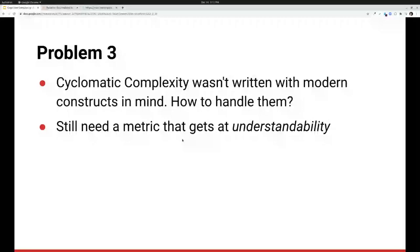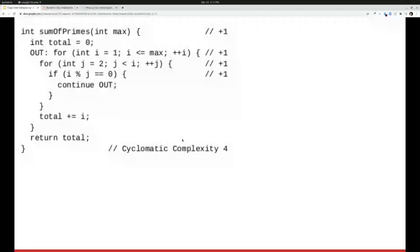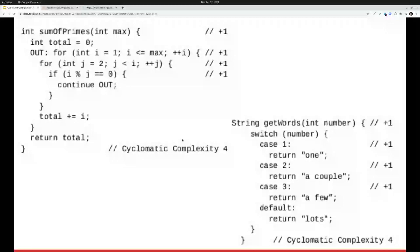As an illustration of that, I've got a couple of methods that I've lifted straight from the white paper on the SonarSource website. So the first here is sum of primes. Cyclomatic complexity, we're going to increment once for the method structure itself, once for each for, once for the if, and that gives us a total cyclomatic complexity of four. Contrast that with this other method, which consists solely of a switch with three cases and a default. Again, we increment for the method structure itself and once for each of the cases, for an equal cyclomatic complexity of four. So while these methods have equal cyclomatic complexity, I think it's obvious that they don't have equal understandability. And so we said, we need something new.